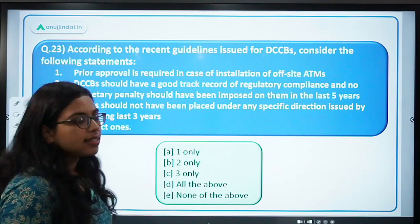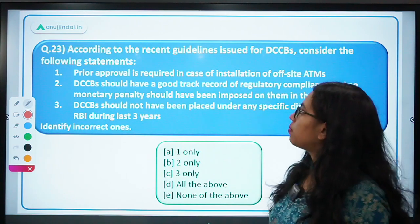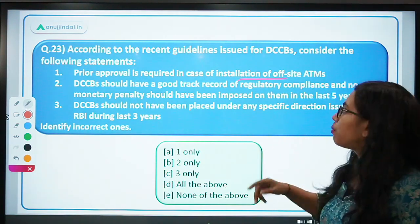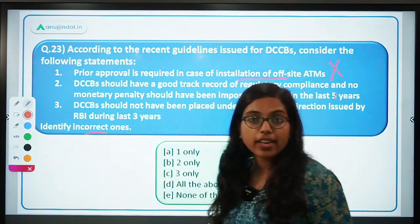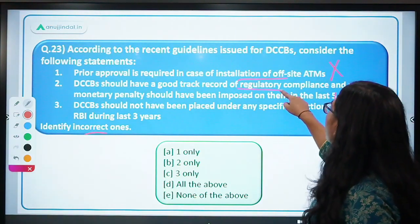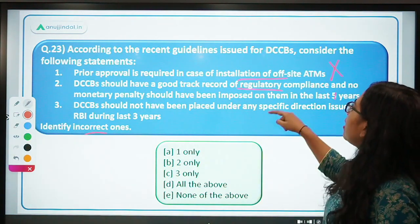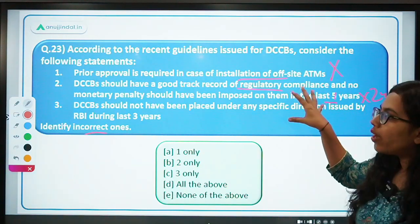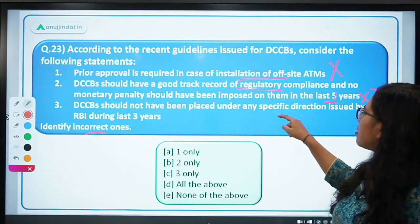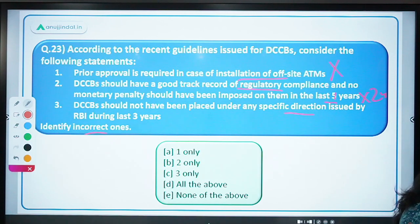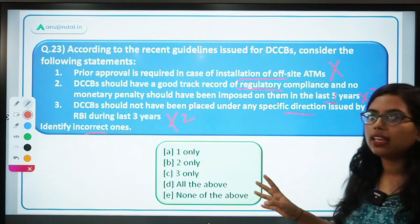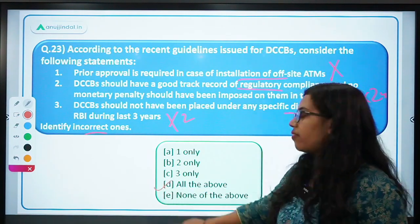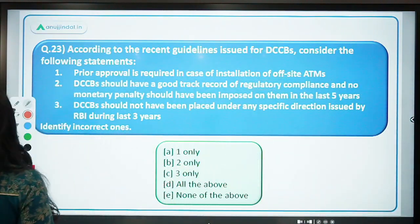Question 23: according to recent DCCB guidelines, which statements are incorrect? Statement 1: prior approval is required for installation of offsite ATM — WRONG, no prior approval is required. Statement 2: DCCB should have a good track record of regulatory compliance and no monetary penalty for the last 5 years — WRONG, it is 2 years. Statement 3: DCCB should not have been placed under any specific directions issued by RBI during the last 3 years — WRONG, it is also 2 years. Easy to remember: operations must be 3 years, everything else is 2-year limits. All three statements are incorrect — option D is the correct answer.